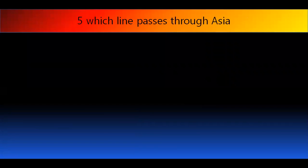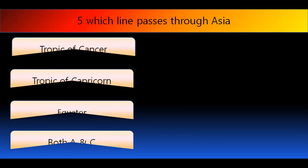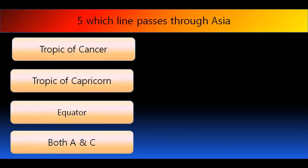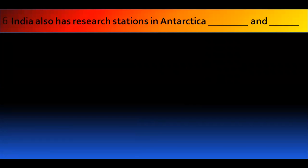Question number 5. Which line passes through Asia? Tropic of Cancer, Tropic of Capricorn, Equator, both A and C. And the right answer is both A and C. Tropic of Cancer and Equator, both these lines pass through Asia. If you can see it very nicely, then Asia can be easily seen this way.